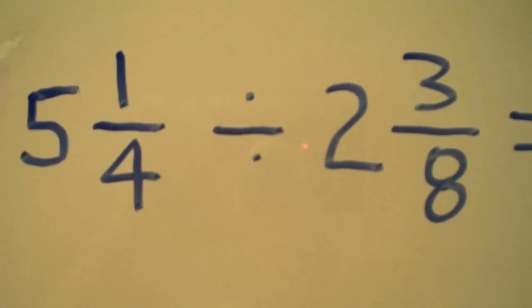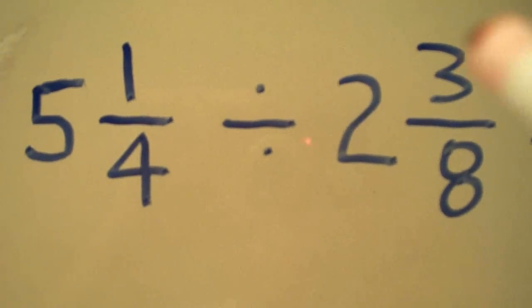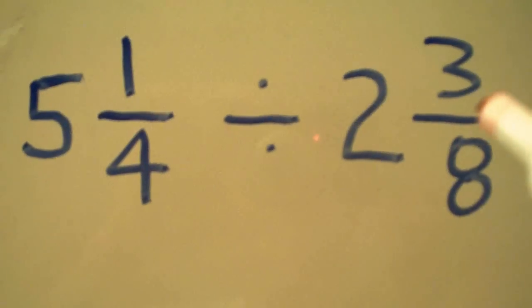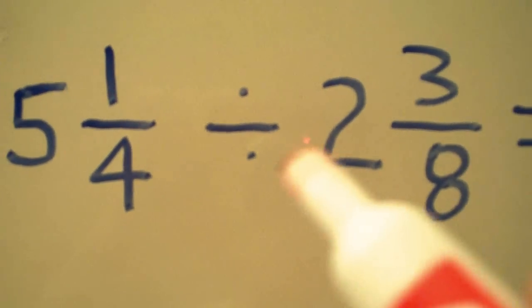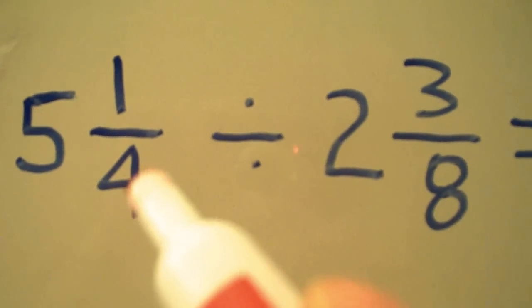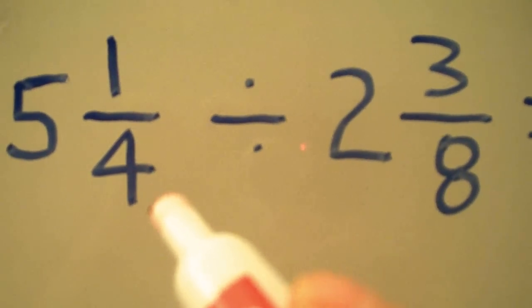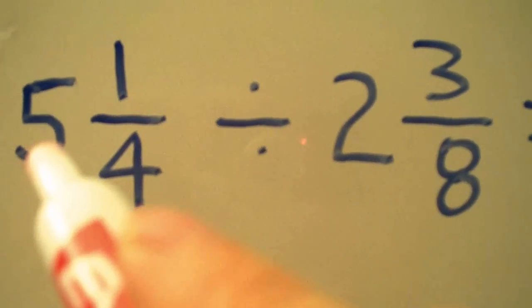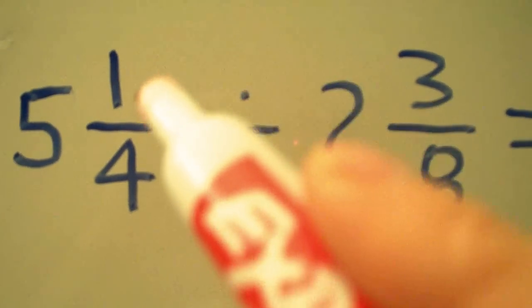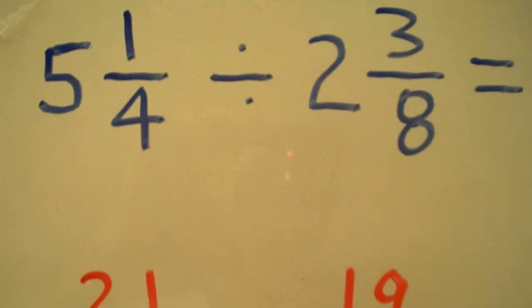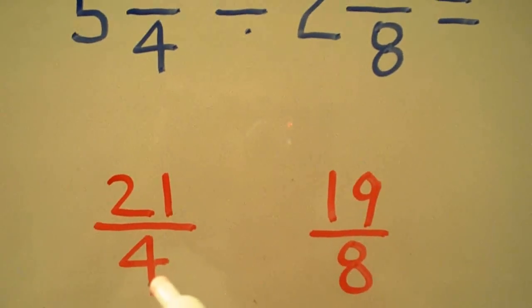The first thing we do when we're dividing mixed numbers is to change both mixed numbers into improper fractions. So to change 5 and 1/4 into an improper fraction, we take our 4, multiply it by 5 to get 20, add our 1 to get 21, keep our denominator of 4 to get 21/4.